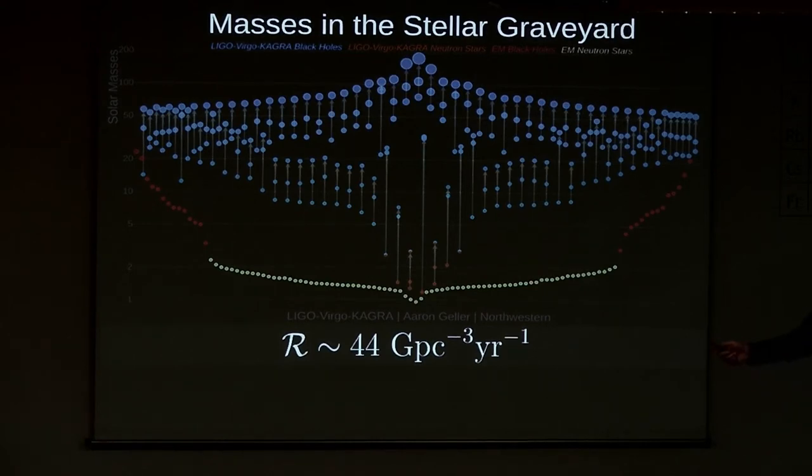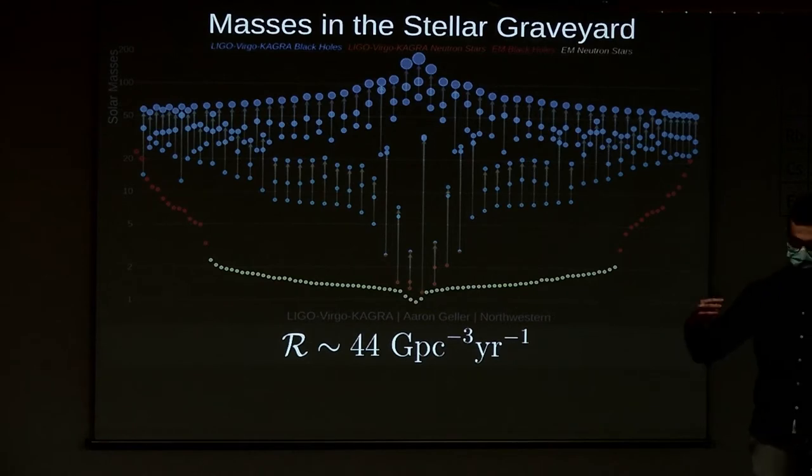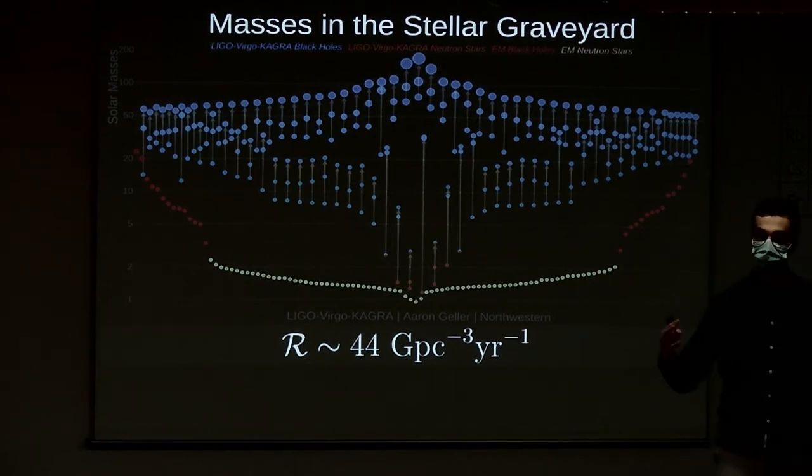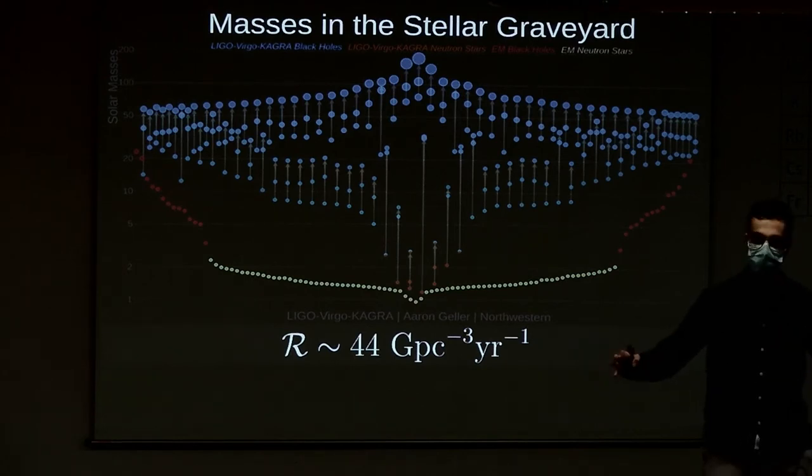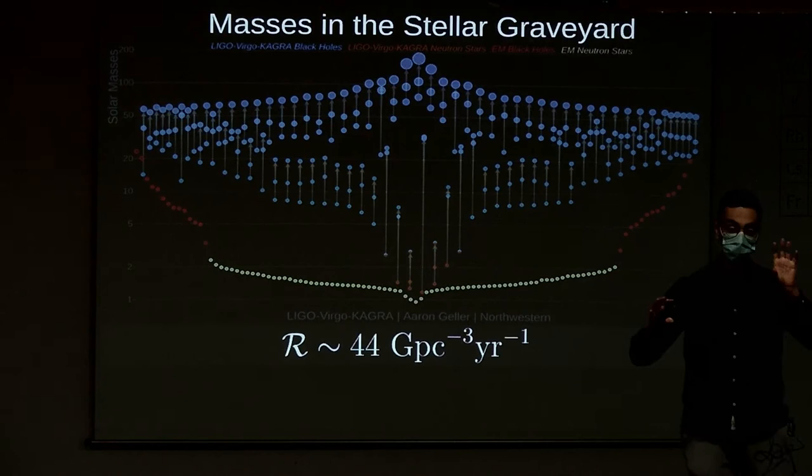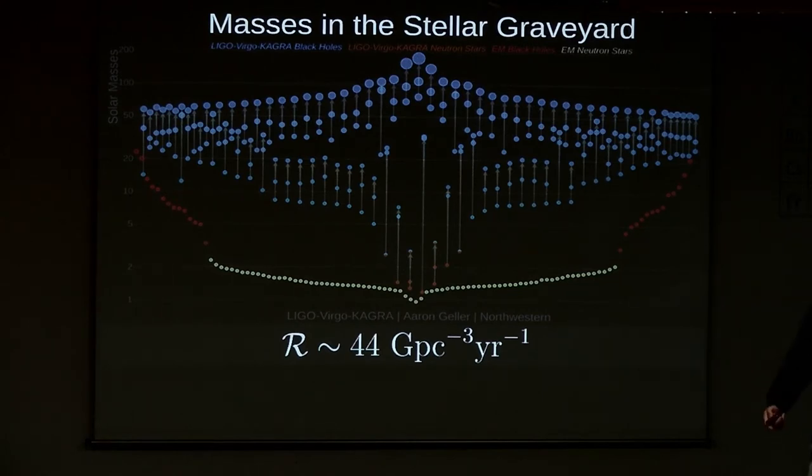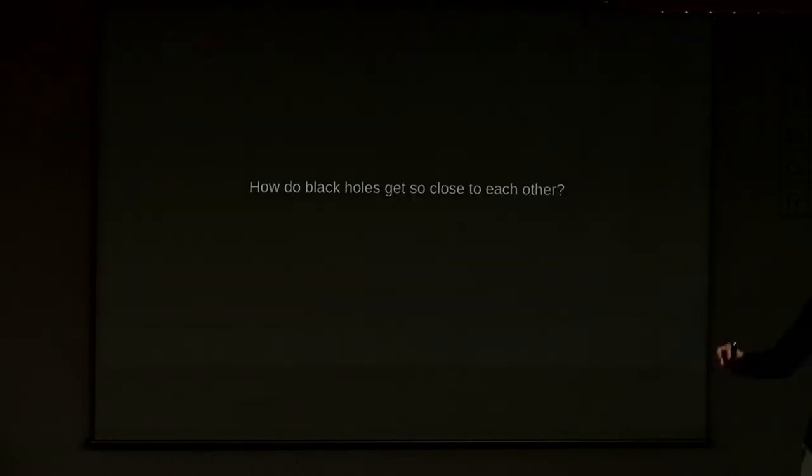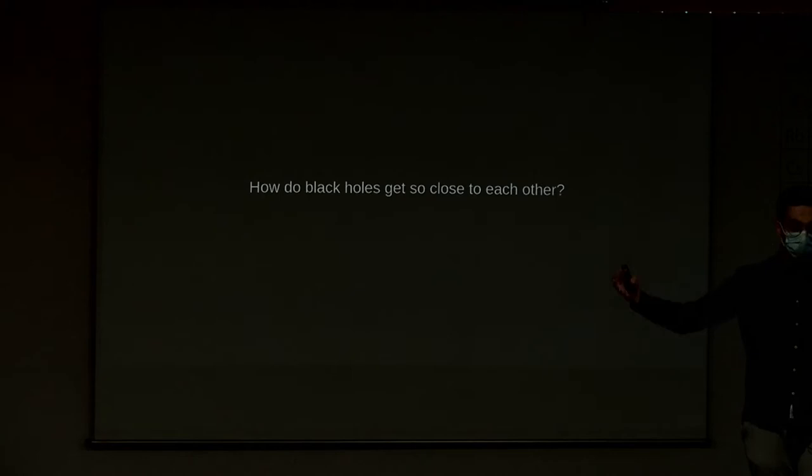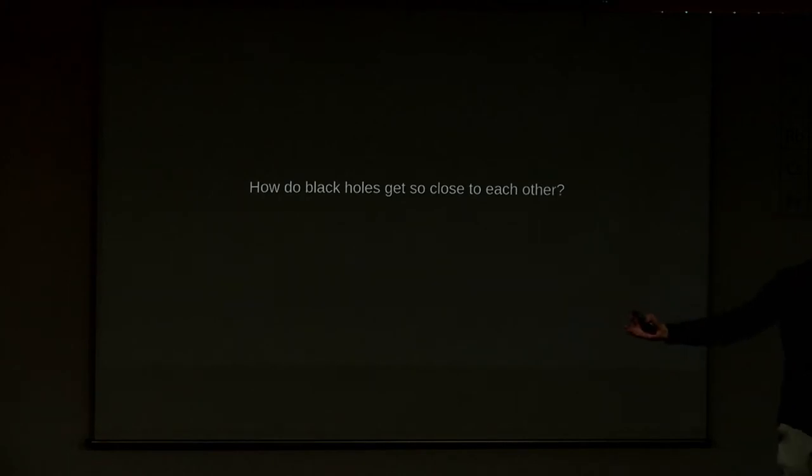We did not expect that because, as I repeat, in order to kick off this process of gravitational wave emission by binary black hole mergers, we need two black holes at about the distance between the Sun and Venus. This is extremely close, and the universe is big and black holes are relatively small. Now this begs the question: How? How do black holes get so close to each other?